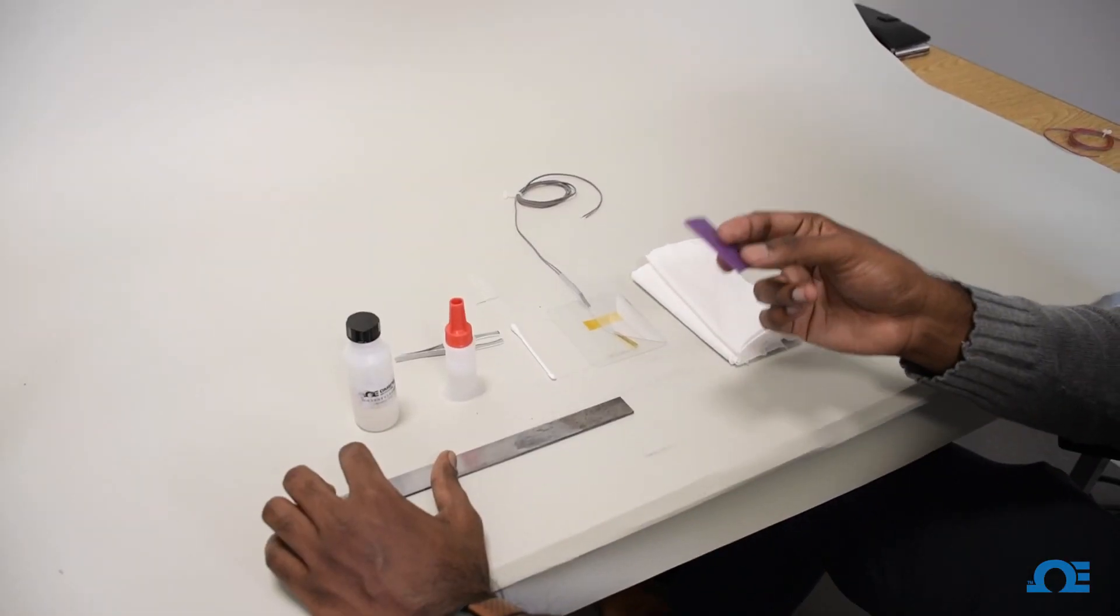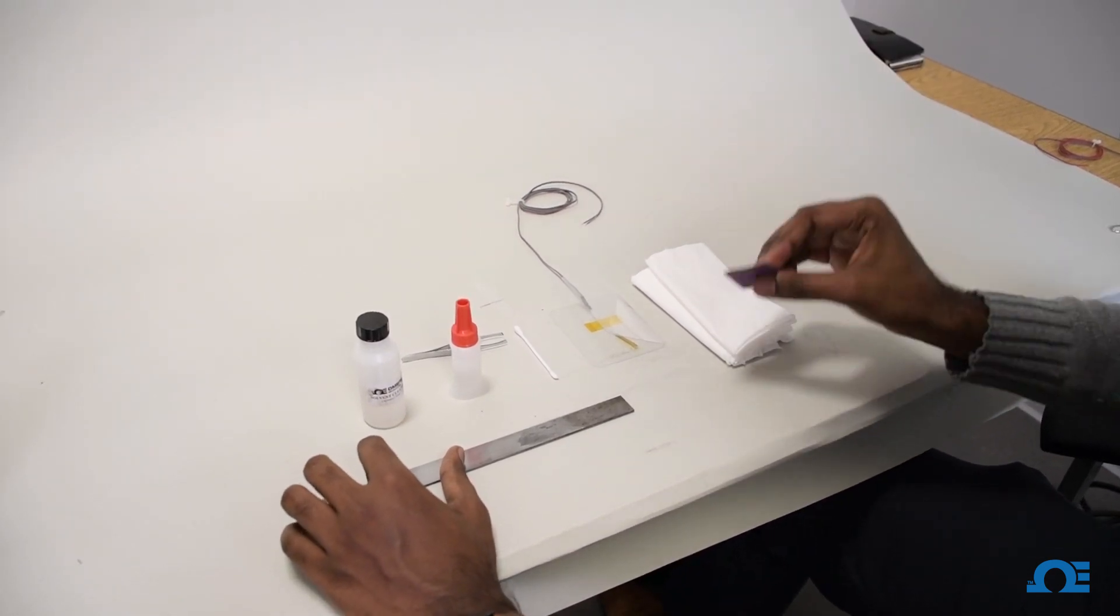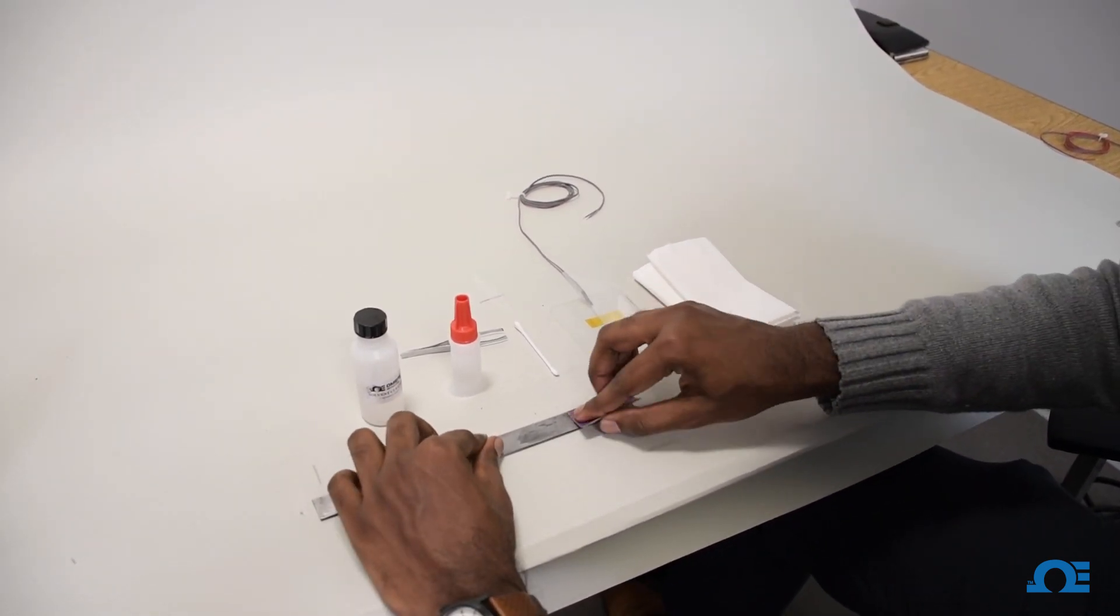First we are going to polish the surface using the 220 grit sandpaper. Take the sandpaper and go in small tiny circles.